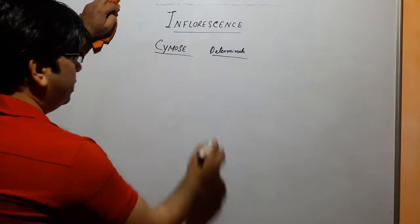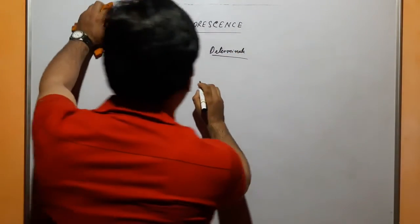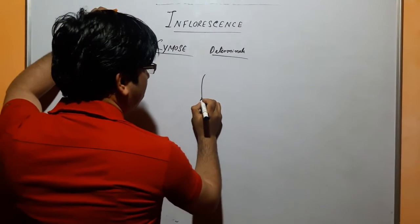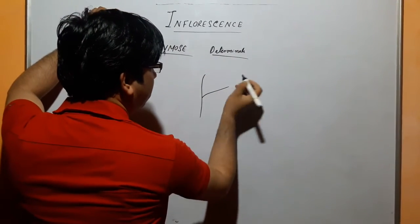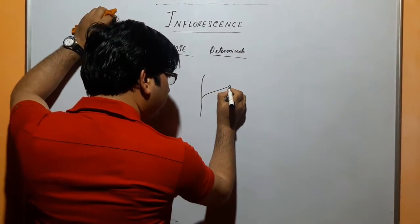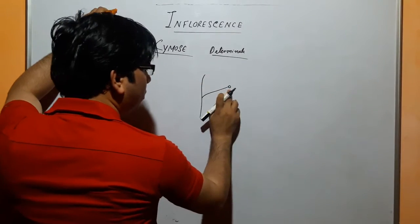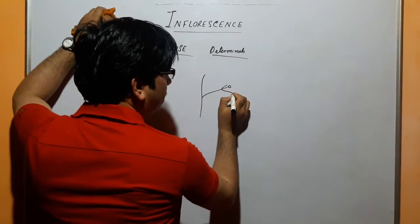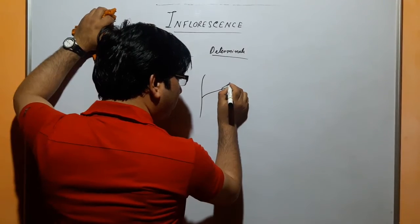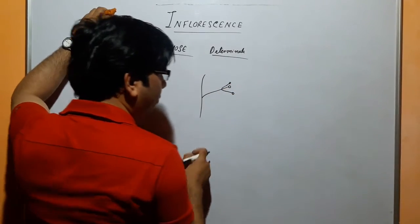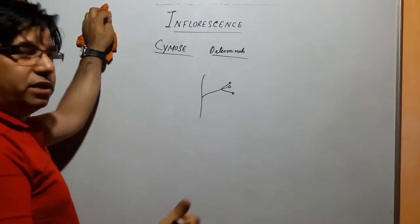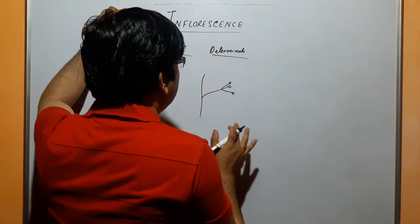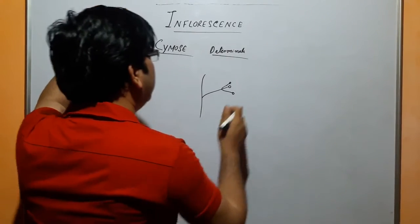Determinate. This is the peduncle. It's a terminal flower, and growth is ceased. If a branch looks at the end, the flower is also ceased. That is determinate. It's not continuous.